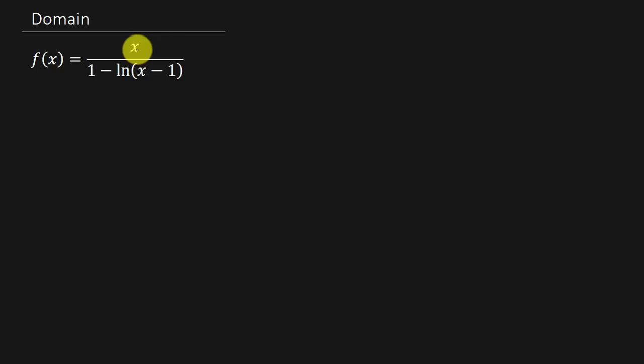The thing that we're going to have to look at is this denominator here. So the first thing we know is the denominator cannot equal zero. Can't have zero in the denominator.